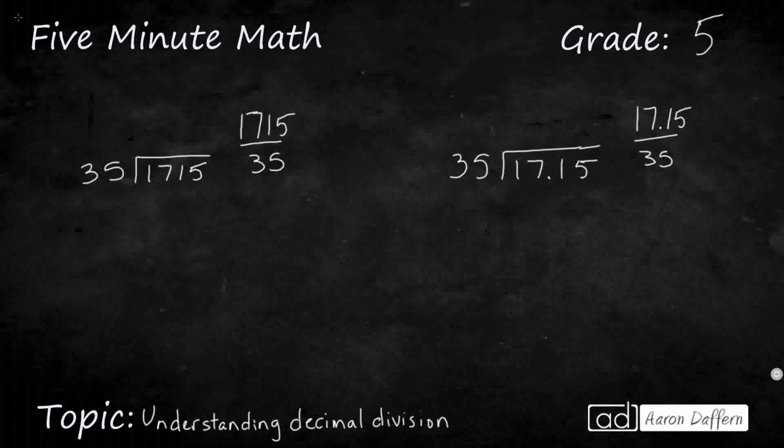So I've got two different problems here that I want to do side by side, and I want to show you that they're very similar. The only difference here is really the decimal point, and I've represented it both as a long division and as a fraction, because you can always represent a division problem as a fraction, and it's just not been completed. So our dividend is going to be our numerator, our divisor is going to be our denominator.